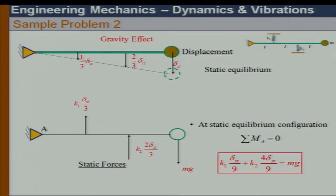The system will first reach a static equilibrium configuration under gravity, coming down by delta_ST. The force diagram shows this spring is under tension and that spring under compression. In both cases the forces act upward on the body — one creates a pull and the other a push upward.